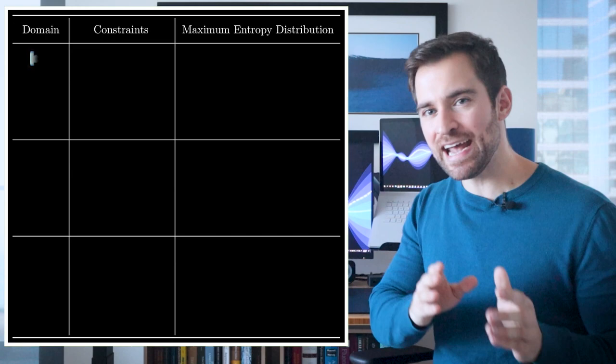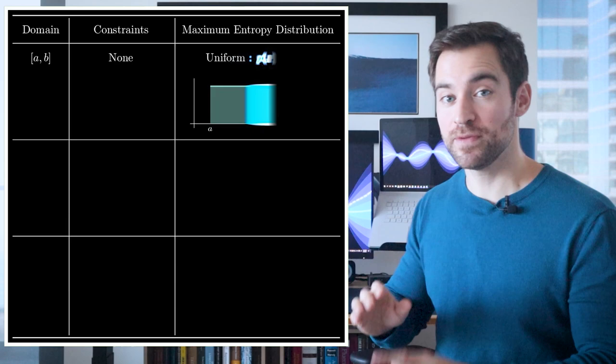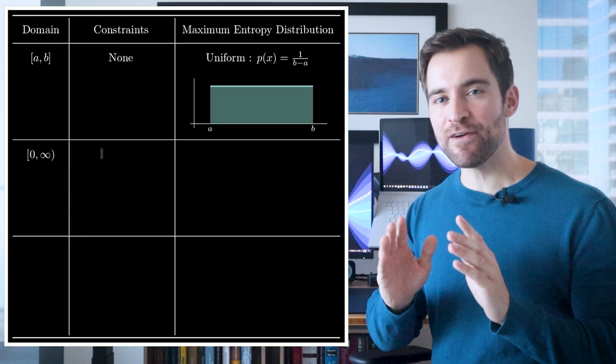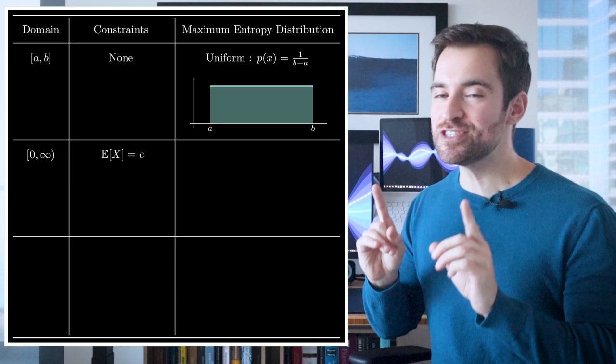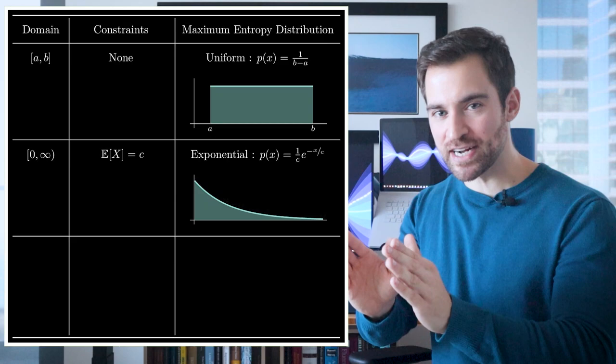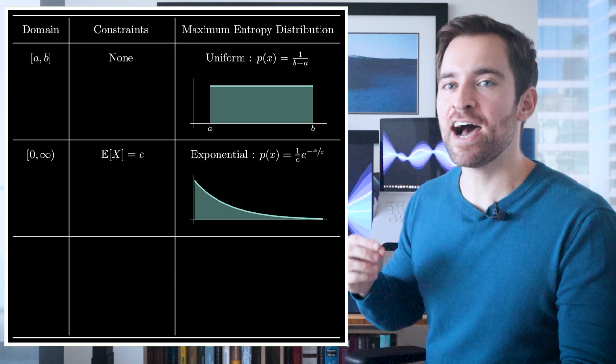What I'm about to do is show you different choices for your domain over the real line, some constraints you may impose, and the maximum entropy distribution that falls out. To start, if you restrict yourself to be between two numbers A and B, and you impose no constraints, then the maximum entropy distribution is the uniform. Let's say the domain is between zero and infinity, and we know the average is some value. The max entropy distribution that achieves that is the oh so familiar exponential distribution.